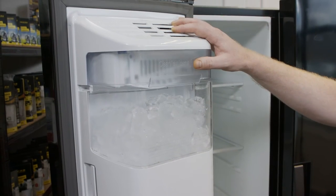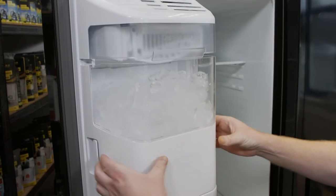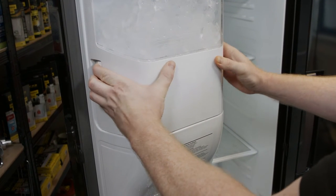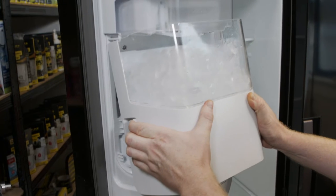To access the ice maker, I first need to remove the ice bucket by pulling the two tabs on either side and then sliding it out.